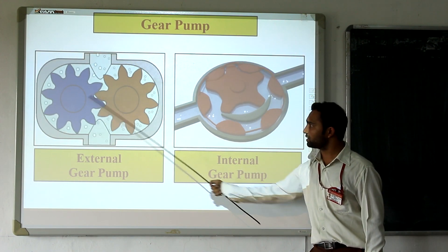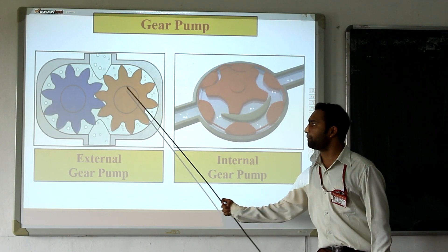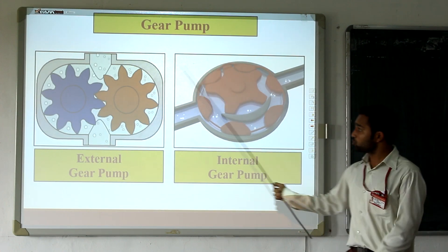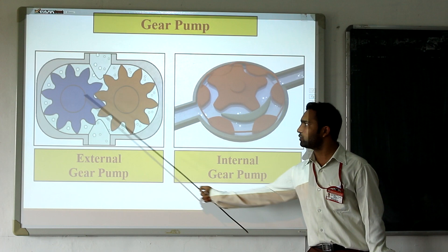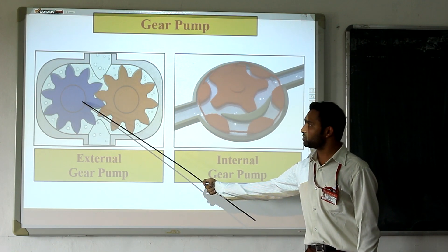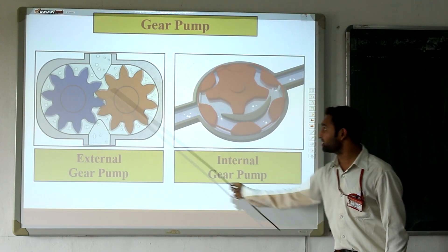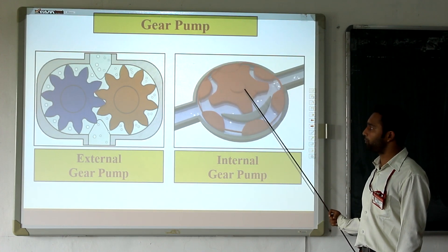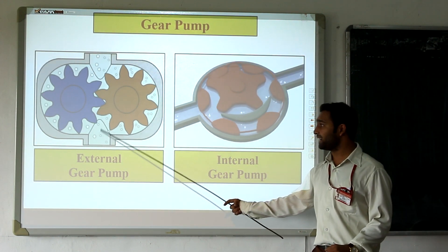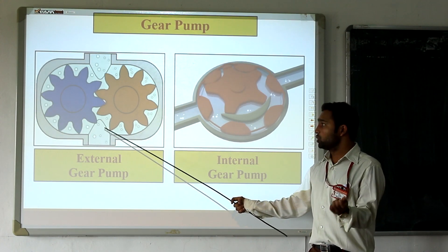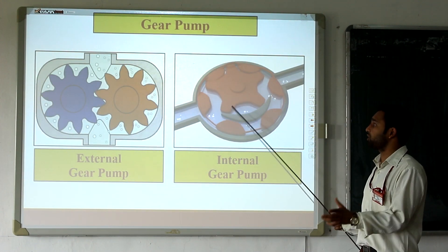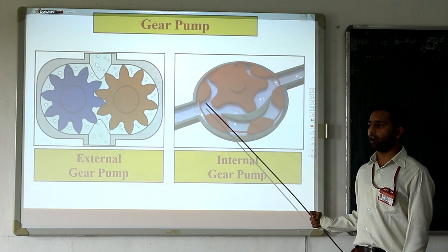Basically, in case of external gear pump, two separate shafts are there, so two bearings are used. In case of internal gear pump, only one shaft is at the central position, so the load is distributed differently. In the external gear case, there are more chances of bearing failure and more maintenance required, while in the internal gear case, there is lesser maintenance. Secondly, regarding the type of fluid handled: external gear pump is utilized for smaller to medium viscosity fluid, and internal gear pump is utilized only for smaller viscous fluid.